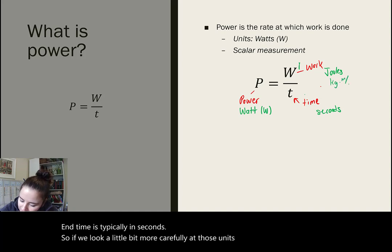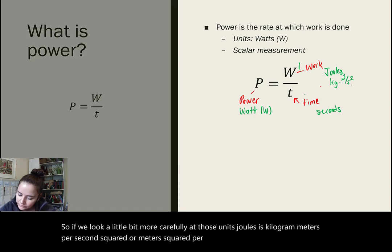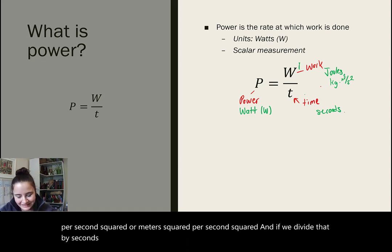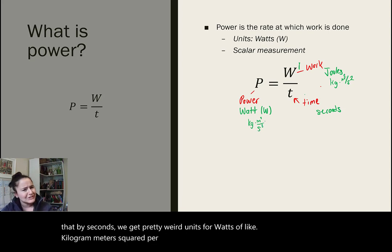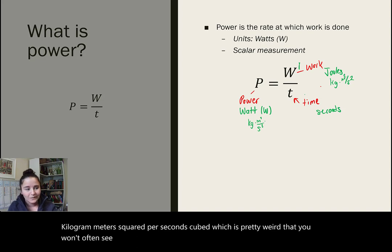If we look a little bit more carefully at those units, joules is kilogram meters squared per second squared. And if we divide that by seconds, we get pretty weird units for watts of like kilogram meters squared per seconds cubed, which is pretty weird. But it is good to know that they are just those derived units.